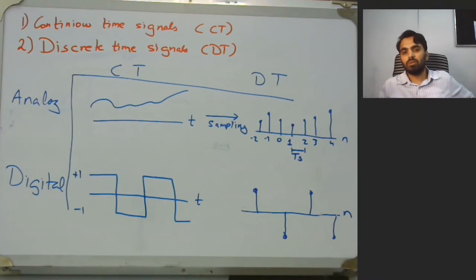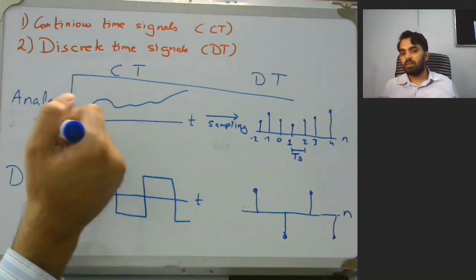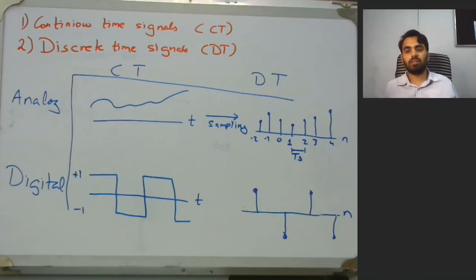Now let us look into some examples of these signals. The continuous time analog signal could be the analog clock that you have. Continuous time digital signal is the digital clock.